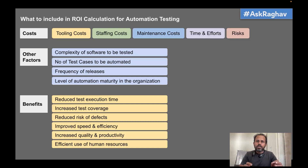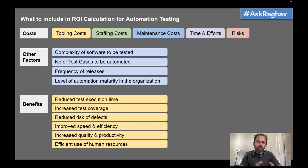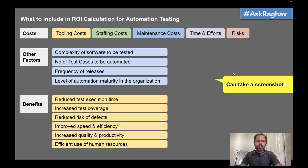When you do automation feasibility analysis or ROI for automation, you can see based on your project and your needs what things to include, what to exclude, and what areas to focus more on. When I show you the template, you will have more clarity. You can take a screenshot of the screen and keep it handy so that you know what areas to consider for ROI calculation.